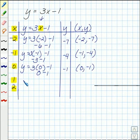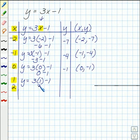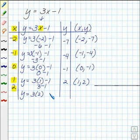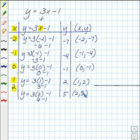Welcome back. I hope you found that when you plugged in 1, you got 3 minus 1, which is 2. So you should have gotten (1, 2) for your ordered pair. And then when you substituted in 2, you should have got 6 minus 1, which is 5. So you would have gotten (2, 5). So these are our solutions to this equation and our ordered pairs.